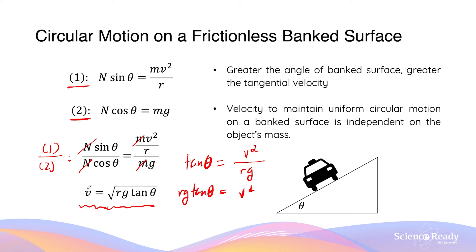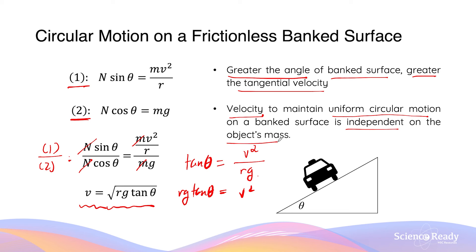The ideal velocity depends on the radius, gravity, and the angle at which the surface is banked. A greater bank angle produces a greater ideal velocity, meaning vehicles can travel faster on more steeply banked surfaces. Notably, the velocity required to maintain uniform circular motion on a banked surface is independent of the object's mass — whether it's a bicycle or a truck, the required velocity is the same, assuming the same radius of circular turn.